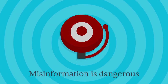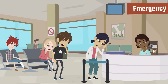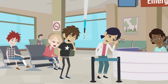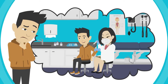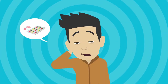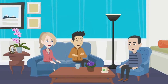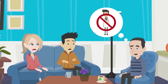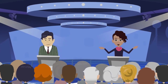Misinformation is dangerous. It impacts public health on a daily basis and in many different ways. It can make people more hesitant to receive vaccines and push them towards false and dangerous alternatives. Misinformation can also reduce people's trust in scientists and health officials. Governments rely on such trust to manage public health issues.